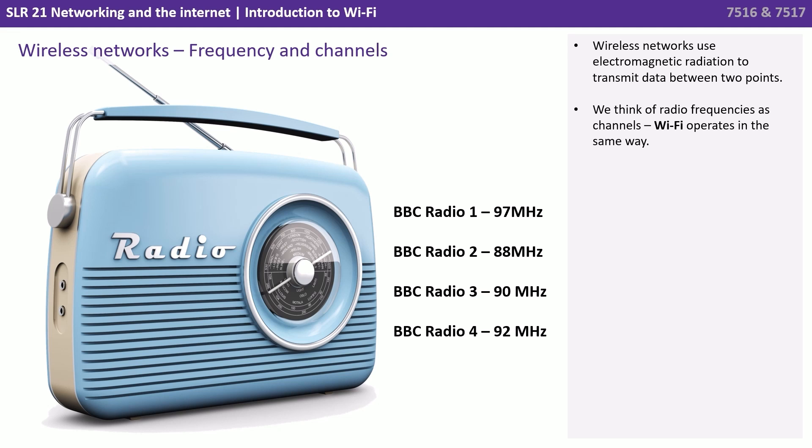It also avoids the need to run lots of cables through the home, which is undesirable for many people. Wireless networks use electromagnetic radiation to transmit data between two points. We think of radio frequencies as channels, and Wi-Fi operates in the same way.